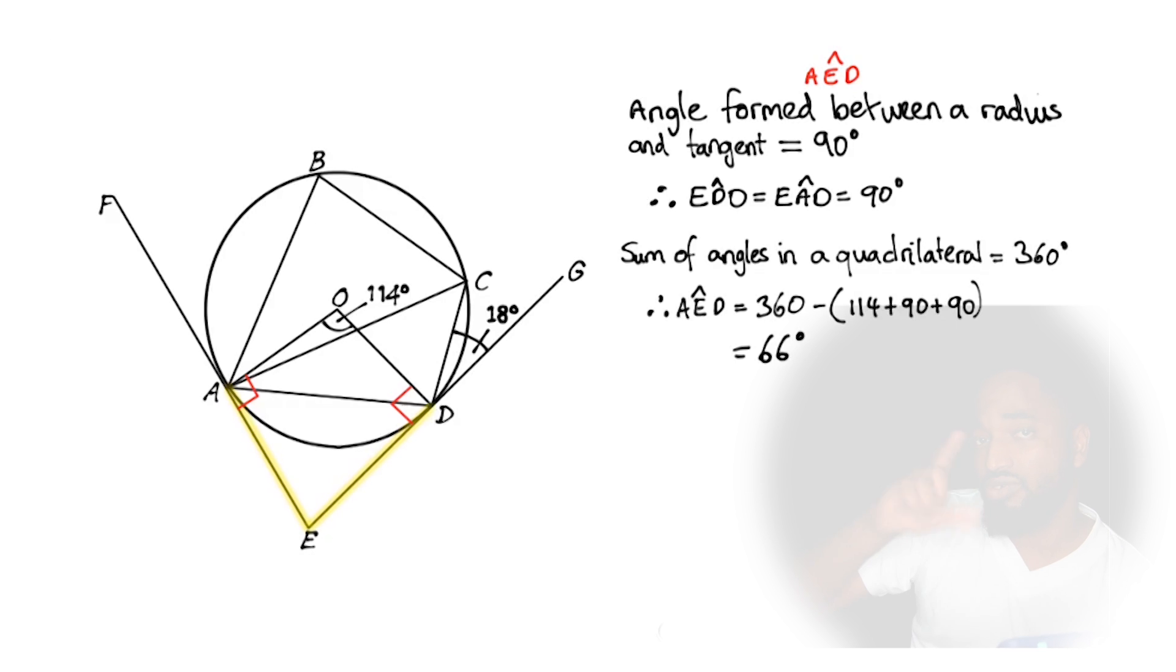Side note, you cannot use the rules that the opposite angles in a quadrilateral add to 180 because this is not a cyclic quadrilateral. However, if you used it in the exam, it would have worked, but you would get the reasoning wrong. All right, pro tip.